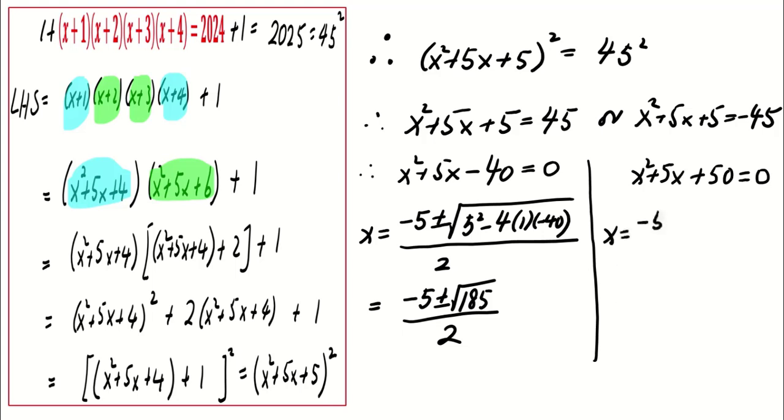Nevertheless, using the quadratic formula, the non-real solutions are (-5 ± i√175)/2.